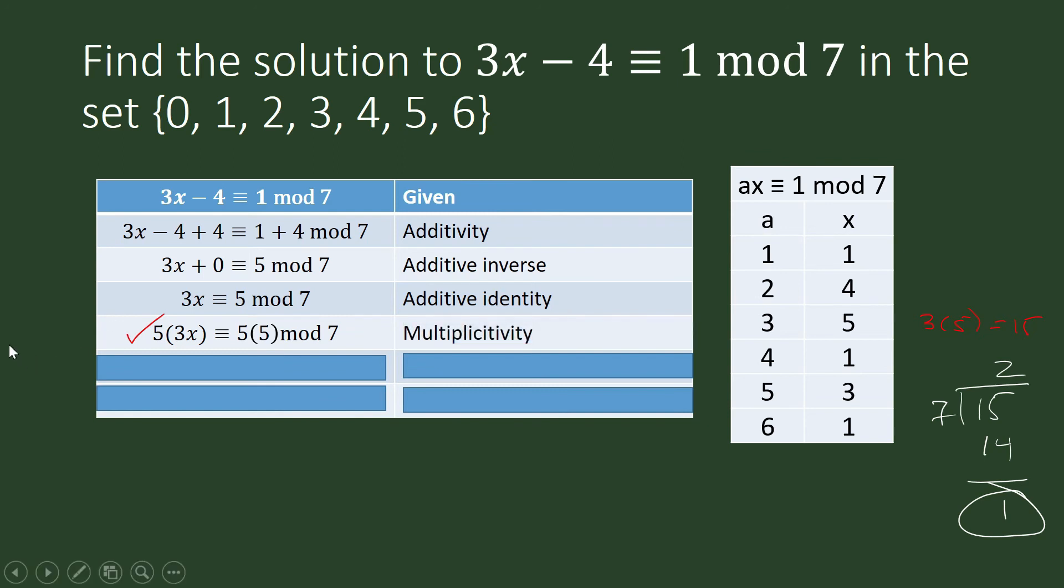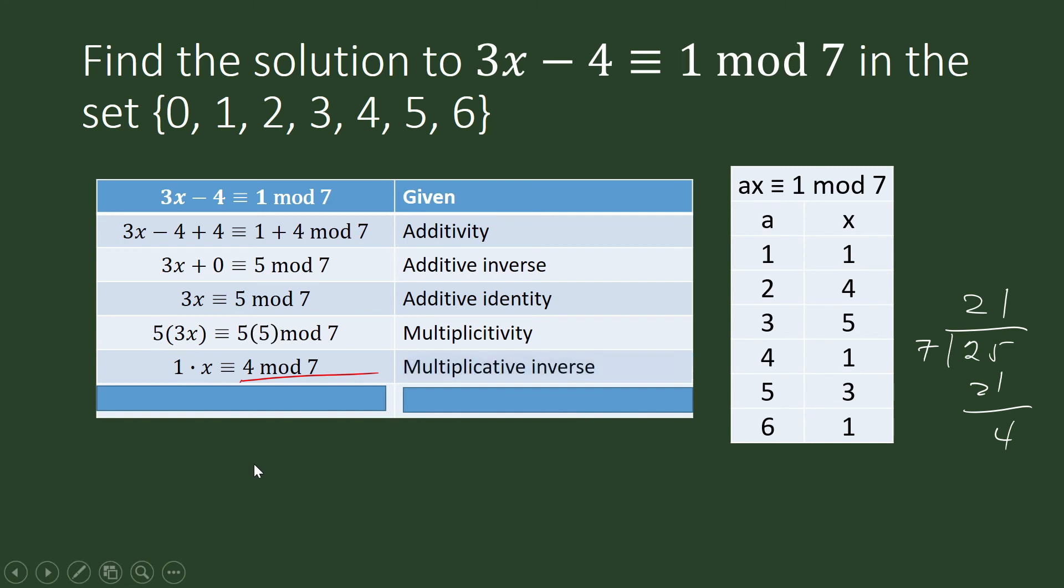What is 5 times 3 now? 5 times 3 is congruent to 1 modulo 7. But what about 5 times 5? 5 times 5 is 25. We divide 25 by 7, and the remainder is 4. 5 times 5 modulo 7 is congruent to 4. So x is congruent to 4 modulo 7.